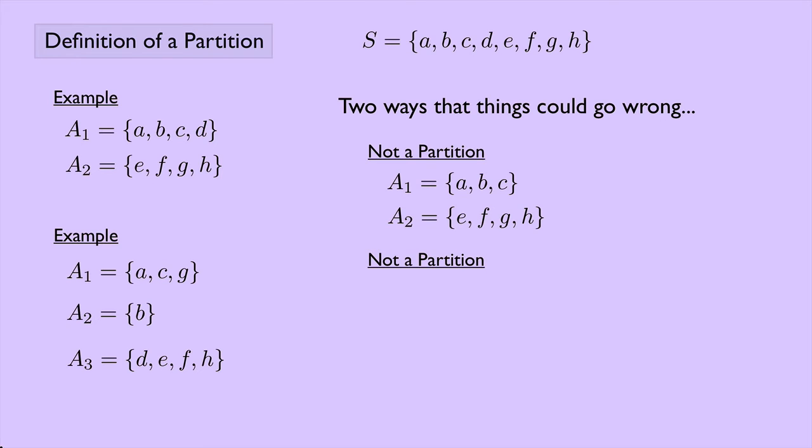Here's another thing that's not a partition. Suppose we have A1 is A, B, and C. A2 is C, D, E, F, G, and H. Well, now if we take the union of A1 and A2, we do indeed get the set S, but we have a problem. The cells are not disjoint. We can see here that this element C shows up in two different cells, A1 and A2. So that's not a partition.